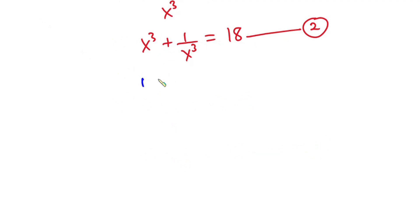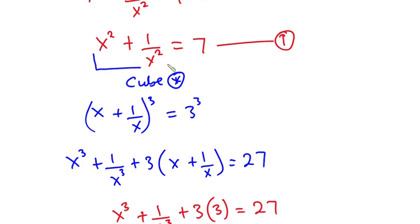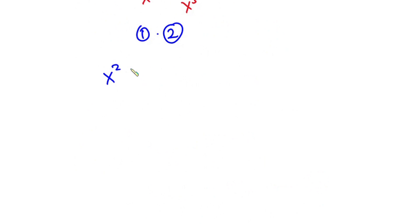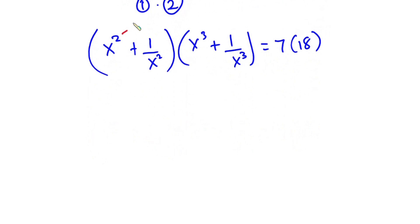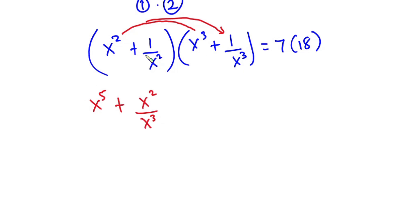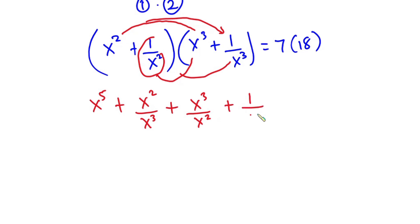Now let's multiply equation 1 and equation 2. From equation 1 the left-hand side is x squared plus 1 over x squared, and from equation 2 the left-hand side is x cubed plus 1 over x cubed, and this equals 7 times 18. Using the FOIL method to expand: we get x to the fifth power plus x squared over x cubed, then plus x cubed over x squared, plus 1 over x to the fifth power, and this is equal to 126.